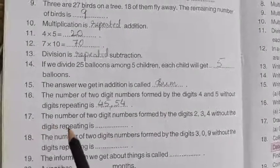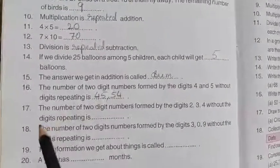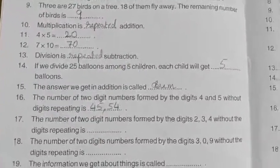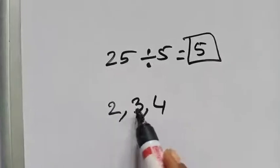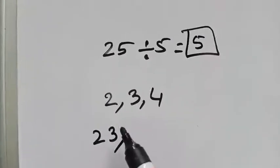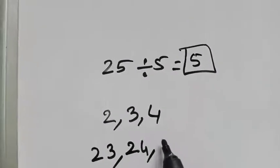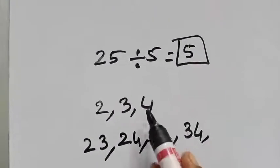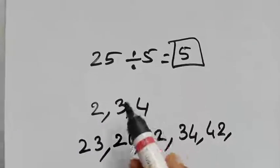Next, number 17. The number of two digit numbers formed by the digits 2, 3, 4 and without the digits repeating is. So again we have to do a rough work for this. So let's write the number 2, 3, 4. You have to make a two digit number without repeating. Now tell me, 2 and 3 first, next we can write 2 and 4, next 3 and 2, next 3 and 4, next children 4 and 2, next the last one is 4 and 3.